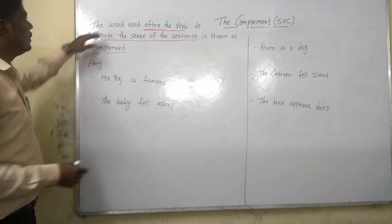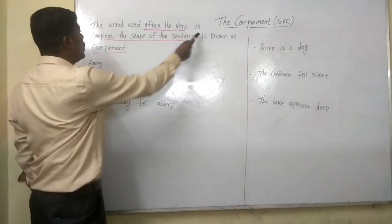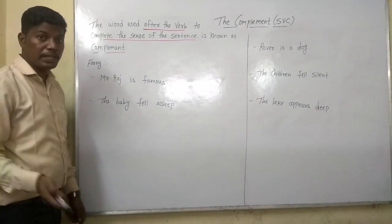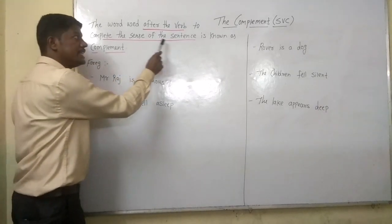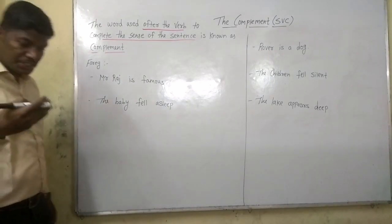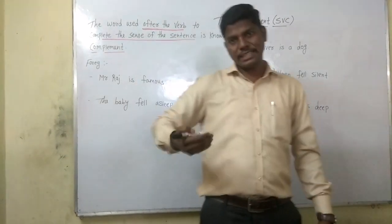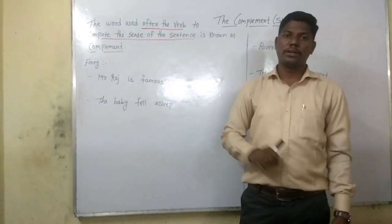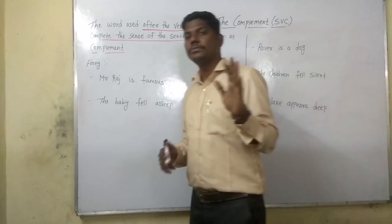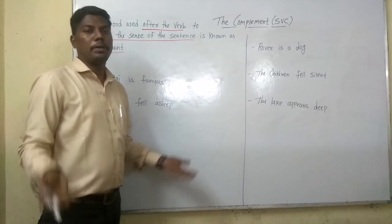Now listen here. The word used after the verb to complete the sense of the sentence is known as complement. The word which is used after the verb to complete the sense of a sentence — that is called complement. I will just explain with the help of an example what exactly the complement is all about.